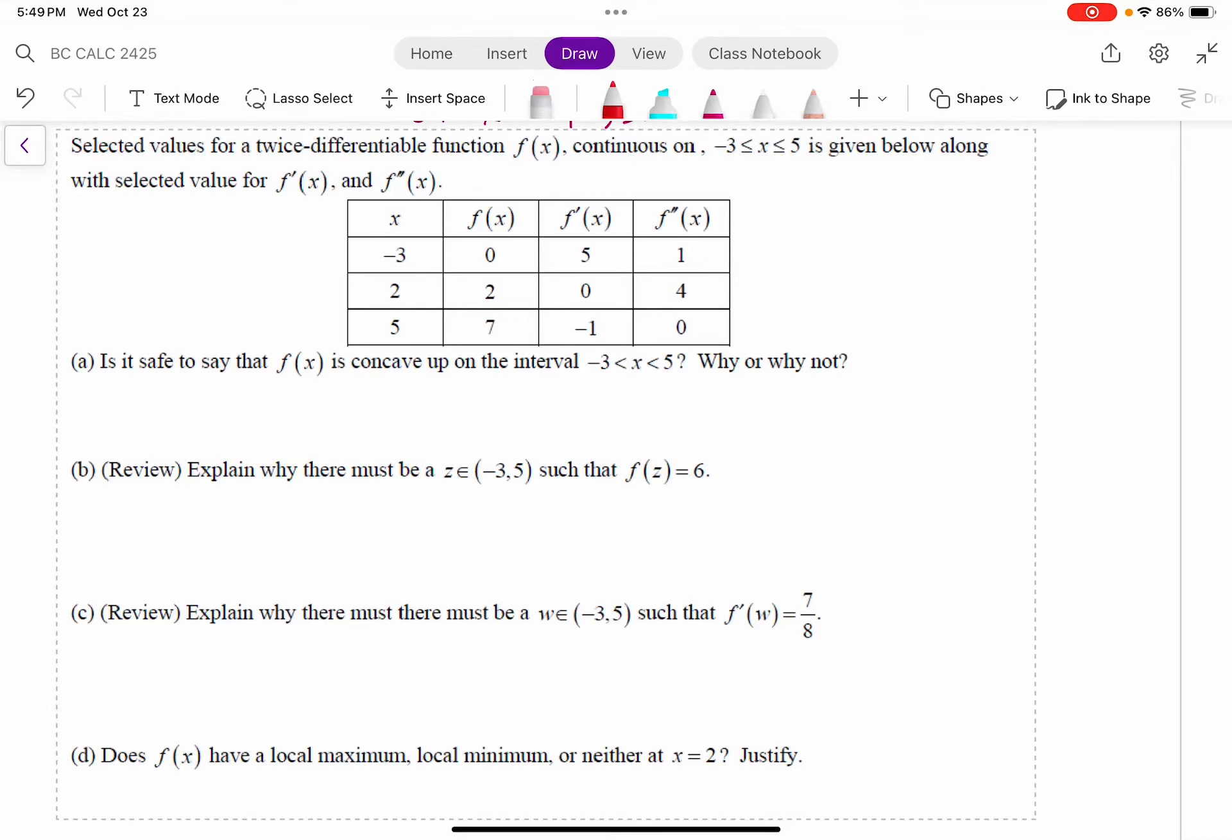Alright, this says selected values for a twice-differentiable function f of x, continuous on the closed interval negative 3 to 5, is given below along with selected values for f prime and f double prime.